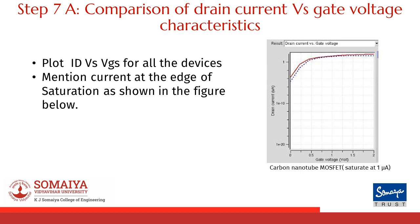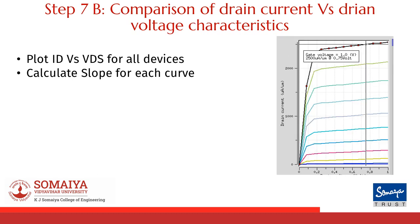Let's start with comparing drain current versus gate voltage characteristics. Here you are expected to plot the characteristics for each device and note the current ID at the edge of saturation. Next, let's observe ID versus VDS and calculate the slope of the graph in the saturation region.